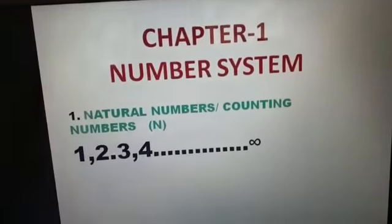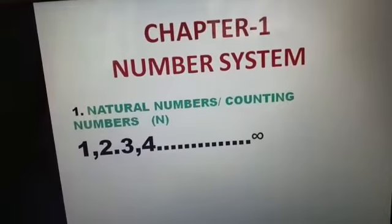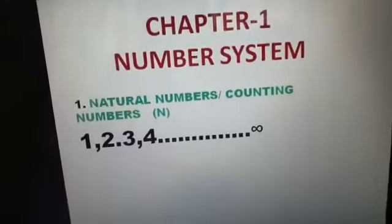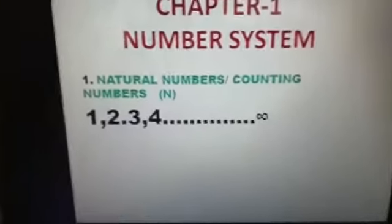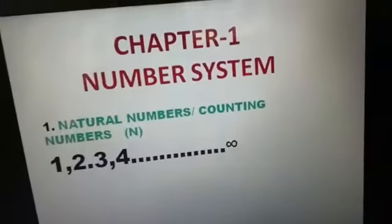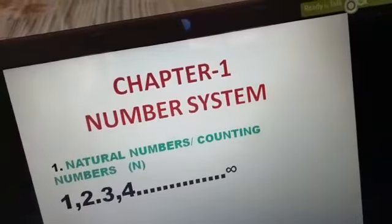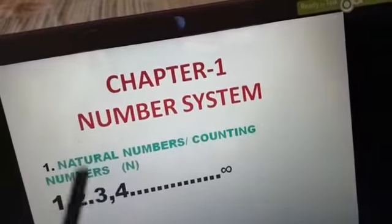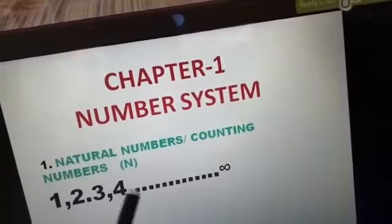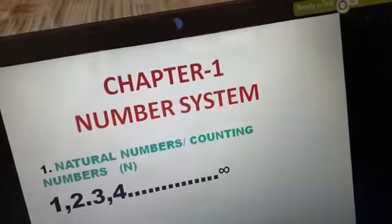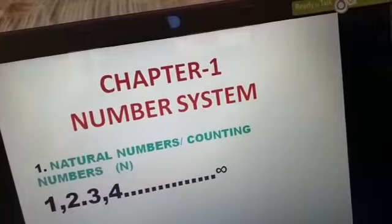You have already been taught different types of numbers in your previous classes. Let's recapitulate, starting with natural numbers. Natural numbers are also called counting numbers and are denoted by N: 1, 2, 3, 4. Whenever we start counting, we start with these numbers.